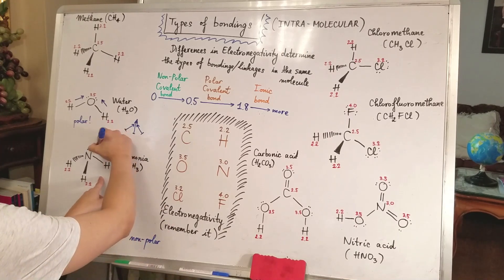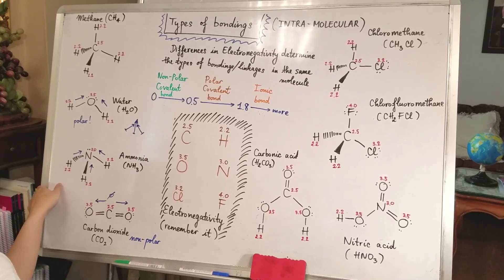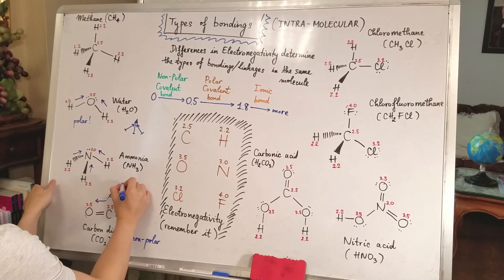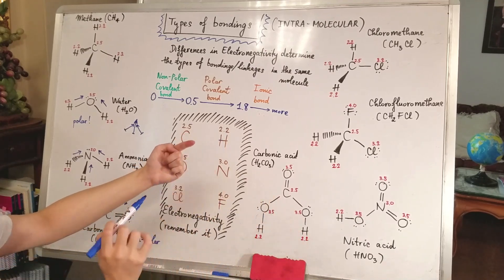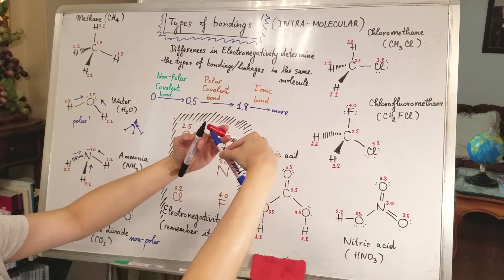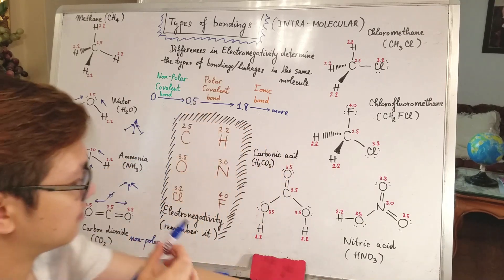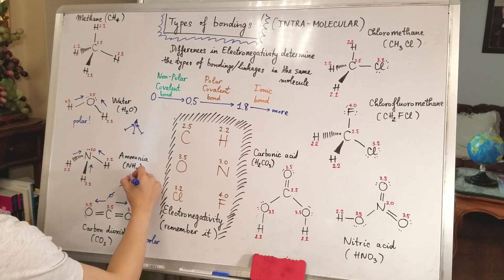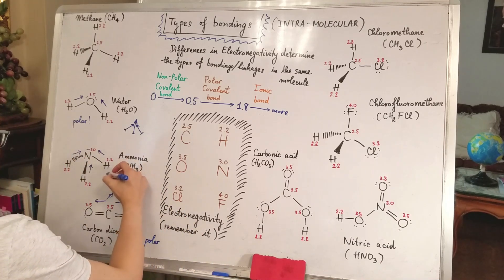For ammonia (NH3): nitrogen is pulling electrons from each of the three hydrogen atoms — from this direction, that direction, and this one. Looking at the geometry, the three vectors don't cancel out. The vector sum points upward — they all contribute in roughly the same direction. So ammonia is definitely polar because it has a net vector sum of electron movement.